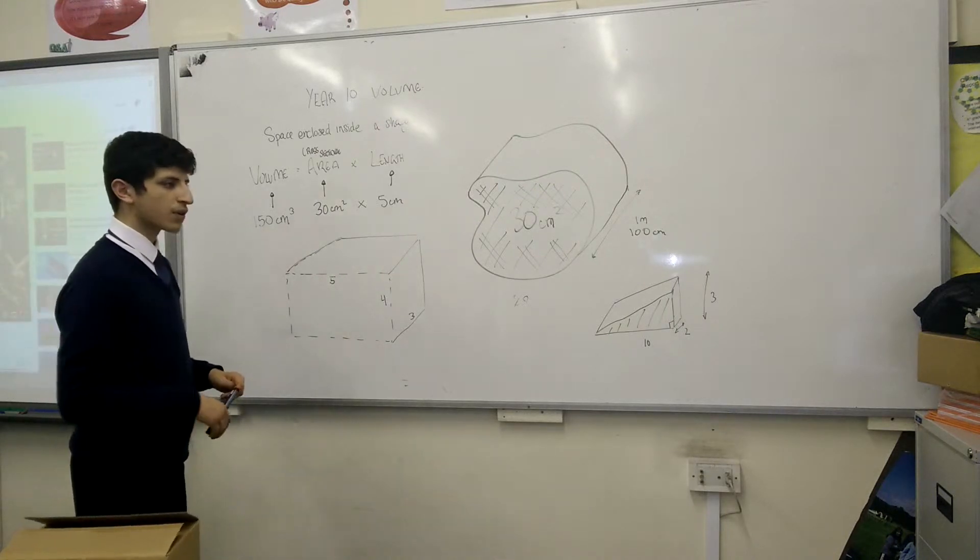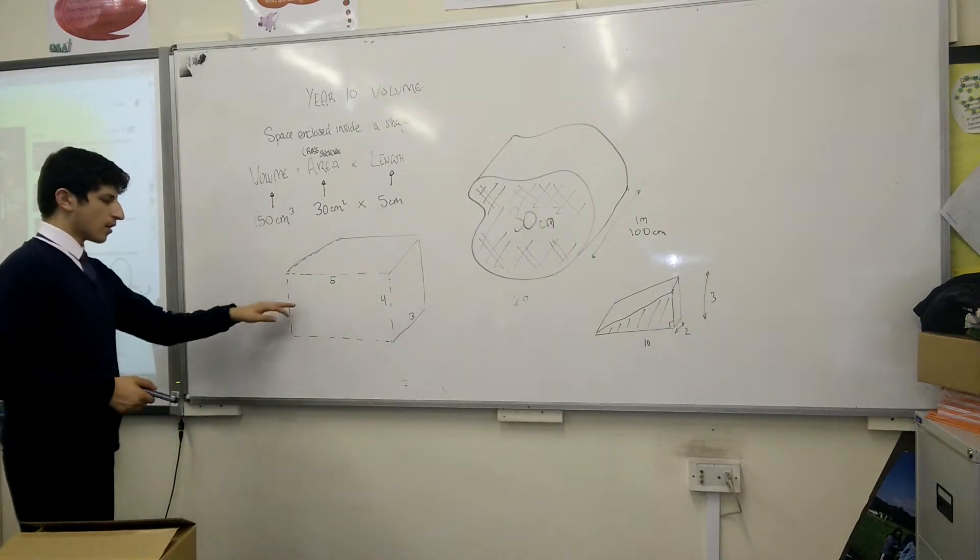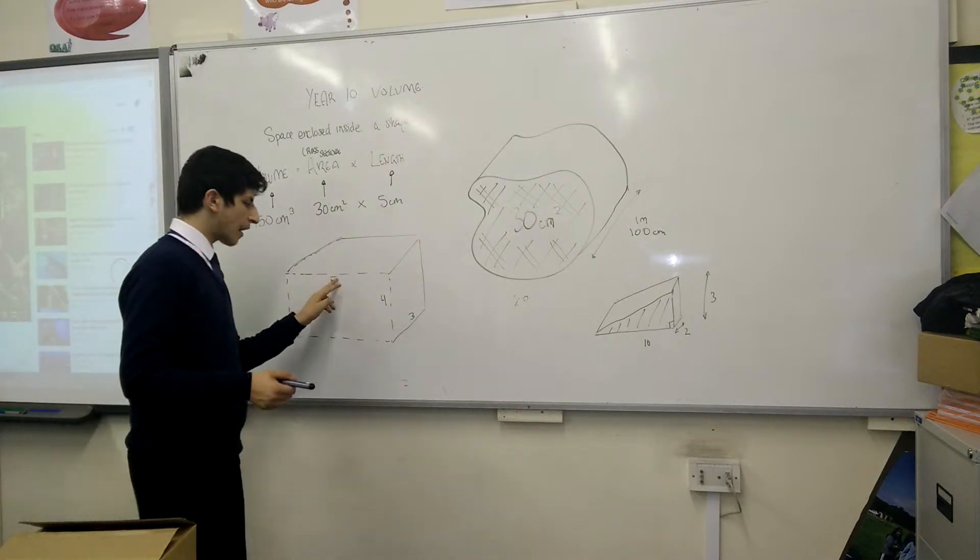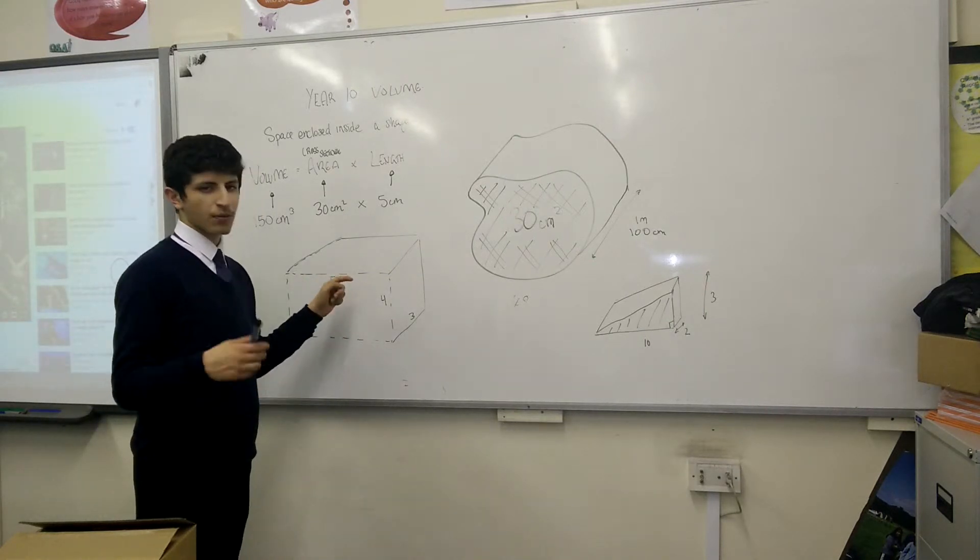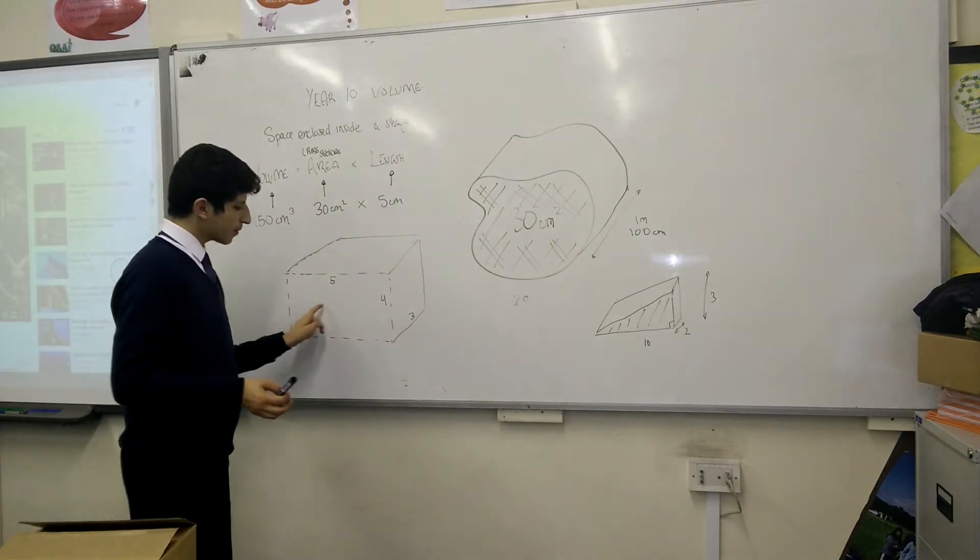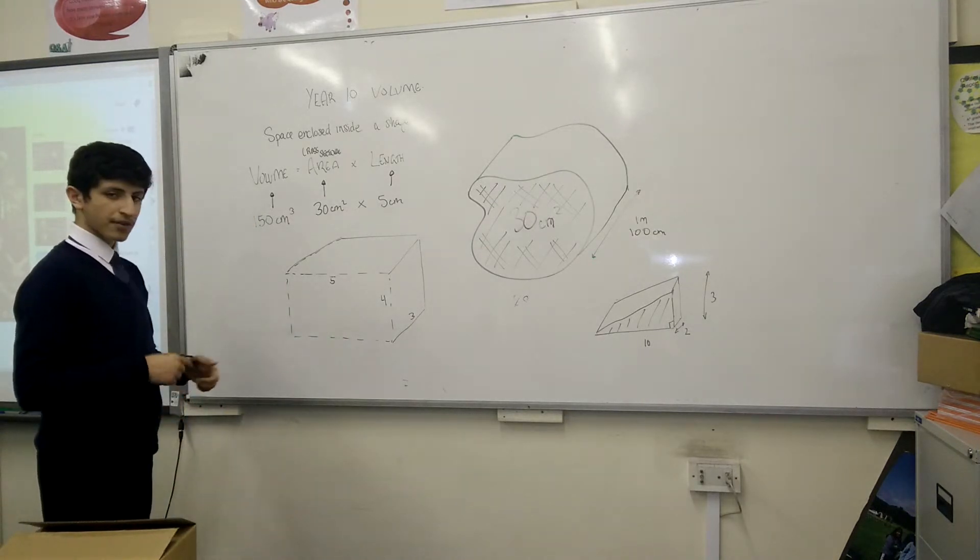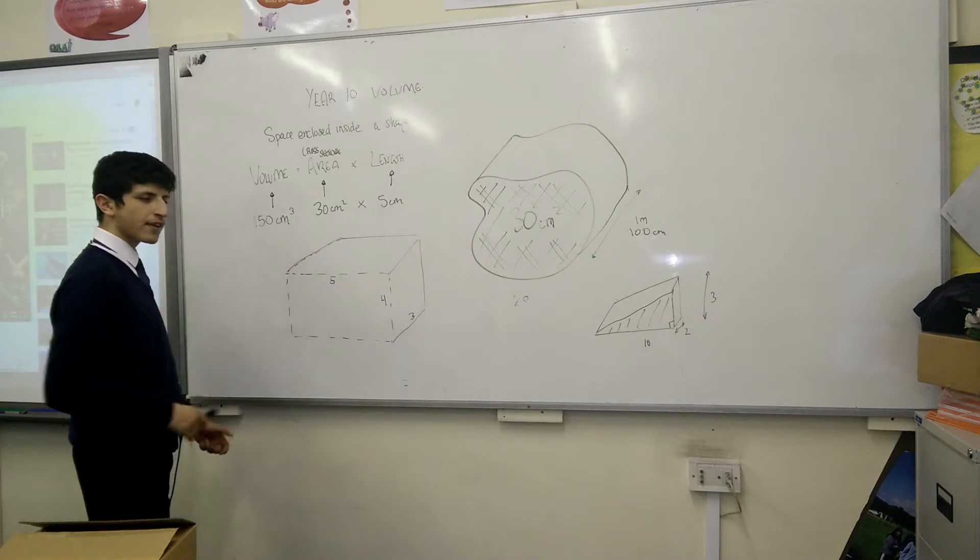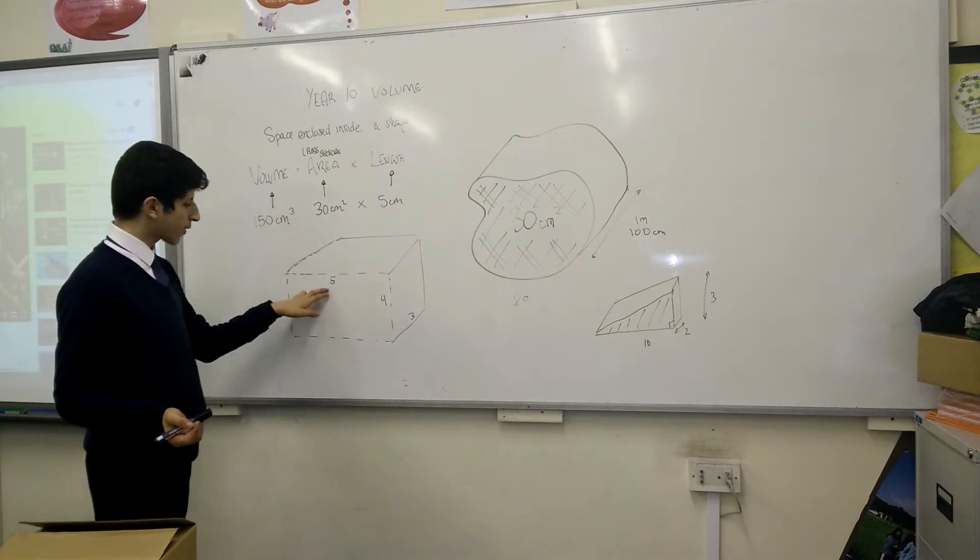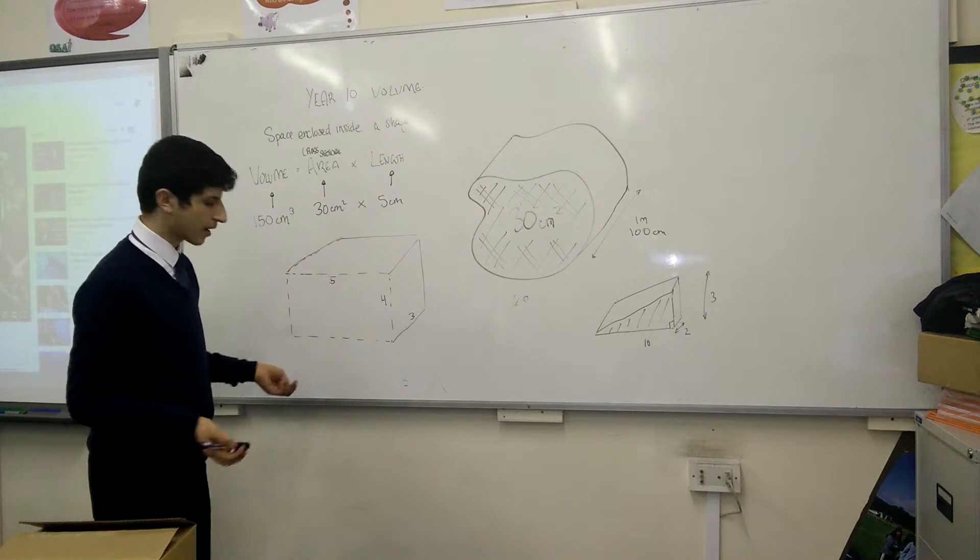Now I'm assuming you've already thought what the cross-sectional area is. You've only been given the measurements: length, width and height. But you don't know what the area is. The best way to tackle this is to go through this area here, the front face. We know that the area can be given by length times width, like in a rectangle.